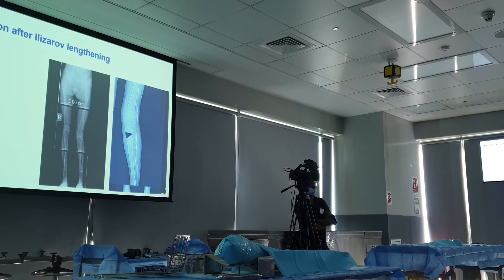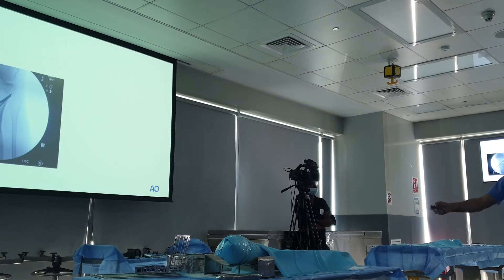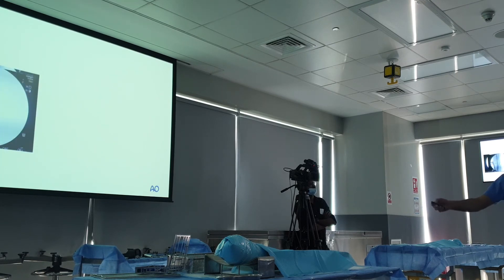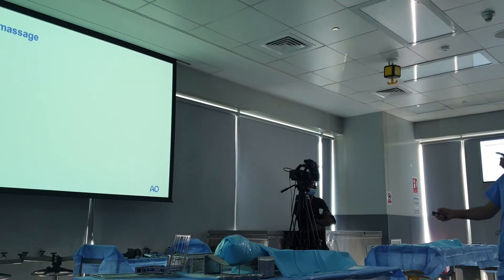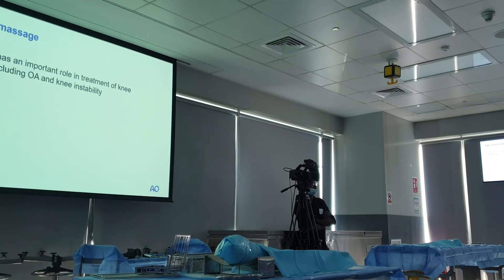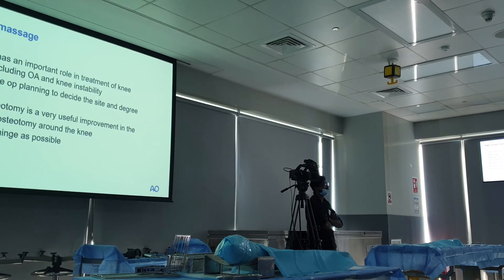But if you know about bi-planar osteotomy — preserving the hinge, ensuring stability, ensuring recovery — you may think to do it differently. Here, we do the osteotomy of the lateral side, preserve the hinge, no need for fibular osteotomy, perform bi-planar osteotomy, and compress the hinge. This is compression — you cannot see the osteotomy line. Take-home message: osteotomy has an important role in treatment of knee pathology and osteoarthritis. Always do pre-op planning to decide your site and degree of correction. Bi-planar osteotomy is a very important improvement. Preserve the hinge as much as possible — this affects recovery. Respect and follow principles always. Thank you.